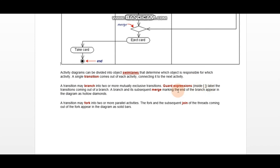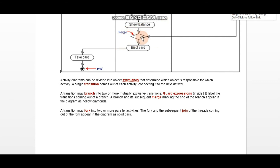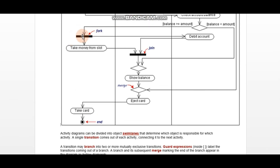Guard expressions are conditions written inside square brackets. After that, we have merge and branch — represented by a diamond sign — where different inputs merge into a further activity. We also have fork and join: you can see the solid bar line. In a fork, one input produces two outputs. In a join, two inputs produce only one output. This is the fork and join concept.